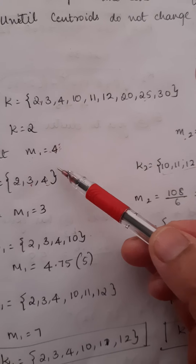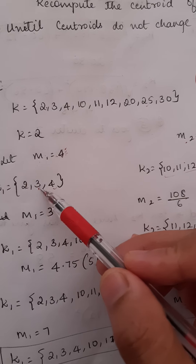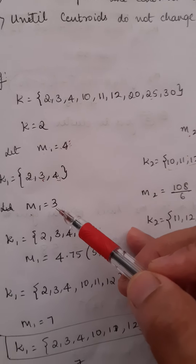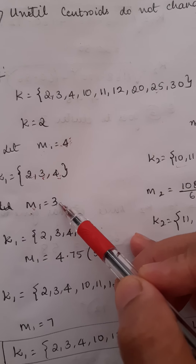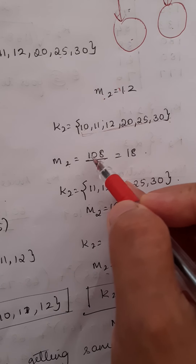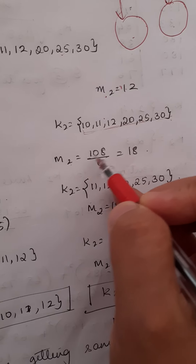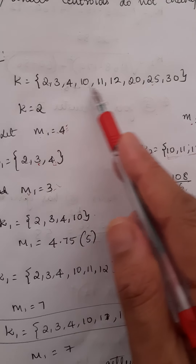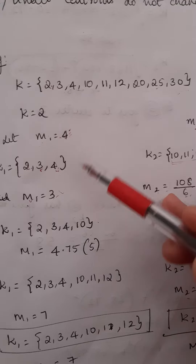In the next iteration, we recompute the centroids. The centroid is now the average of the numbers in each cluster. I have three numbers 2, 3, and 4 — their average is 3, so m1 becomes 3 in the second iteration. For K2, the total is 108 with six numbers, so 108 divided by 6 is 18 — the second centroid becomes 18. Now we go back and check if each number from the original set is closer to 3 or to 18.